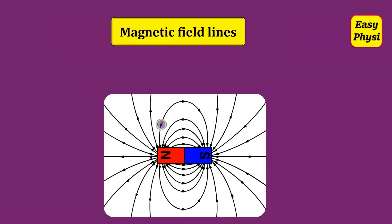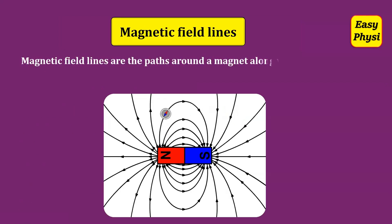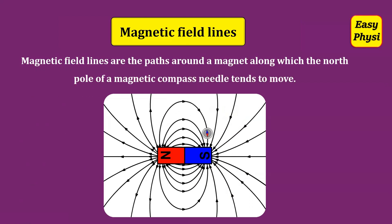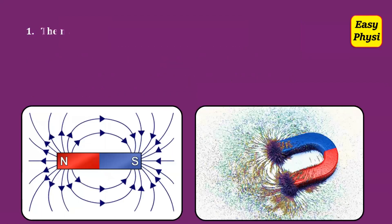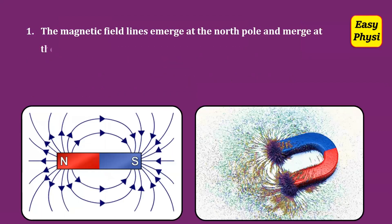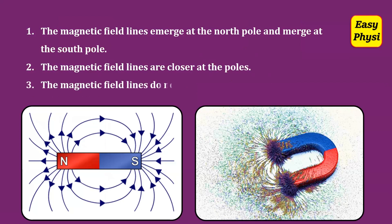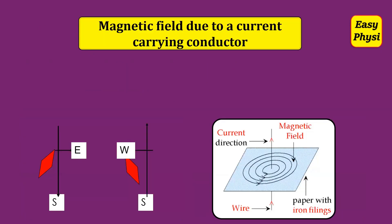Magnetic Field Lines: Magnetic field lines are the paths around a magnet along which the north pole of a magnetic compass needle tends to move. The magnetic field lines emerge at the north pole and merge at the south pole. The magnetic field lines are closest at the poles and do not intersect each other.